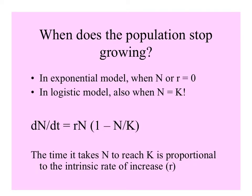In the exponential model, populations stop growing when the population size is zero or little r equals zero. In the logistic model — the model with a limit — when N equals K, when population size equals the carrying capacity, populations will stop growing. The time it takes the population size to reach the carrying capacity is proportional to the intrinsic rate of increase; a higher little r will lead to reaching the carrying capacity sooner.